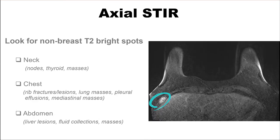Finally, on the STIR sequence, look for any bright spots that aren't in the breast. Occasionally, you'll find neck masses like large lymph nodes or thyroid masses. You may find an abnormality in the chest — rib fractures or rib metastases, lung masses, pleural effusions, mediastinal masses are all quite common. Or in the abdomen, you may find a liver lesion, a fluid collection, or any other mass.